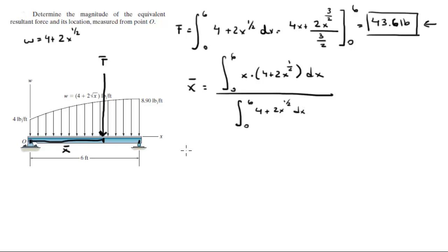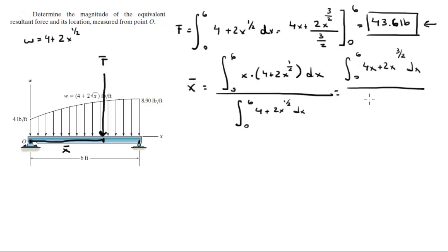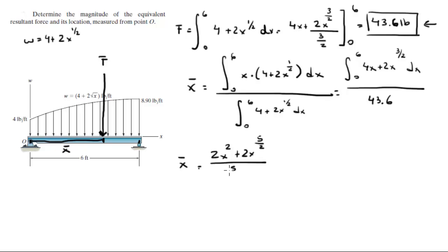So this becomes the integral from 0 to 6 — we're going to distribute — giving 4x plus 2x to the 3/2 dx, with the bottom already found as 43.6. The top becomes 2x squared plus 2x to the 5/2 divided by 5/2.